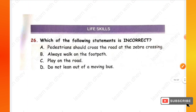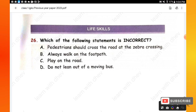The next section is Life Skills — you will have a total of five questions, each carrying one mark. Question 26: Which of the following statements is incorrect? Options: pedestrians should cross the road at the zebra crossing; always walk on the footpath; play on the road; do not lean out of a moving bus. The incorrect one is option C — play on the road.